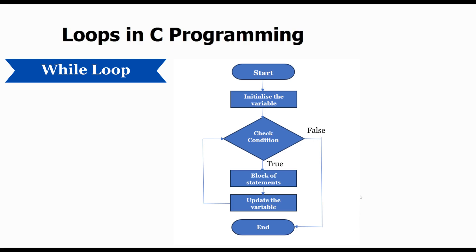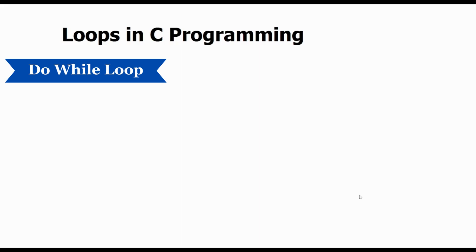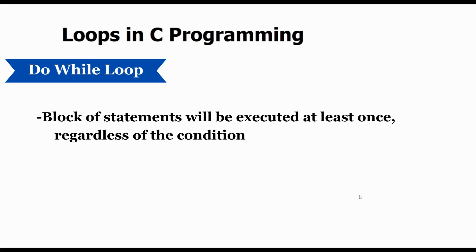First we initialize the variable, then we check the condition. If the condition is true then the block of statements will be executed with an updation of the variable, and again the condition is checked with the updated value. If the condition is true then the process is repeated, but if the condition is false then we end here. Now let's talk about the last loop, the do-while loop. This loop ensures that the code block is executed at least once regardless of the condition.